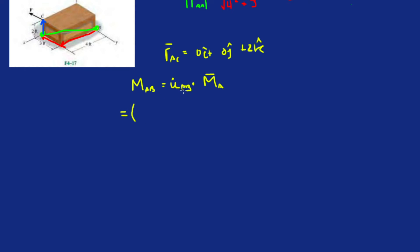So u_AB is 0.8i minus 0.6j, dotted with the determinant of the moment. The moment is i, j, k. The distance from A to C is 0, 0, and 2. You could do the moment about B for practice and get the same answer. Then the force on the bottom row is 50, -40, and 20.